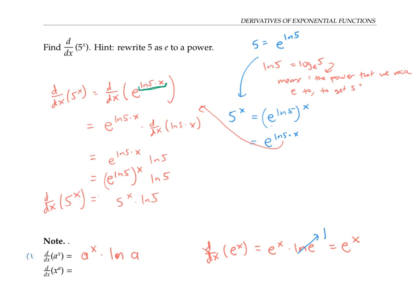It's important to note the difference between two expressions. For d/dx of a to the x, the variable is in the exponent — this is an exponential function, and we use the rule d/dx of a to the x equals a to the x times ln a. On the other hand, for d/dx of x to the a, the variable x is in the base, so we don't use the exponential rule — we use the power rule. For example, d/dx of x cubed is three x squared, and in general, d/dx of x to the a is a times x to the a minus one.